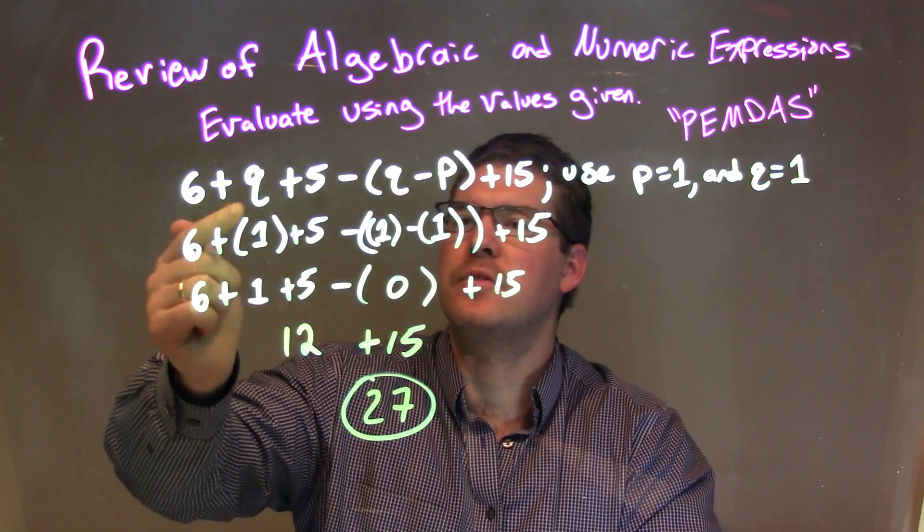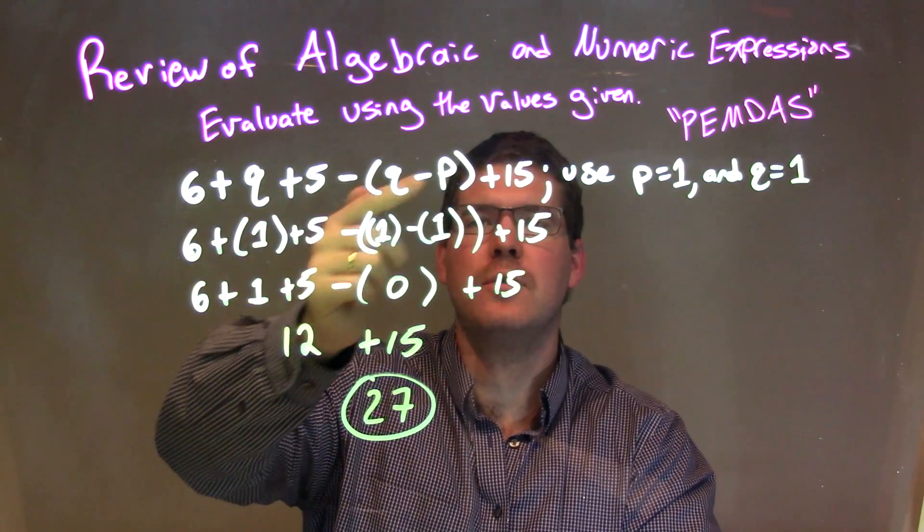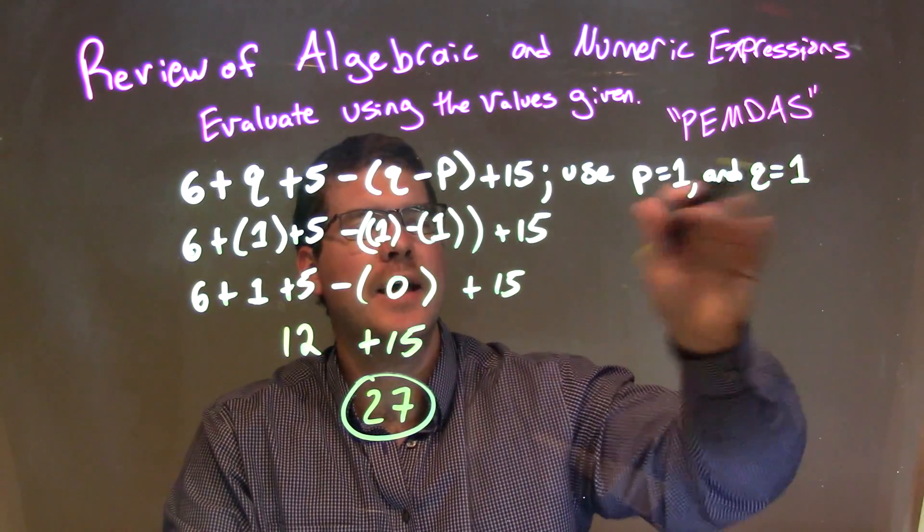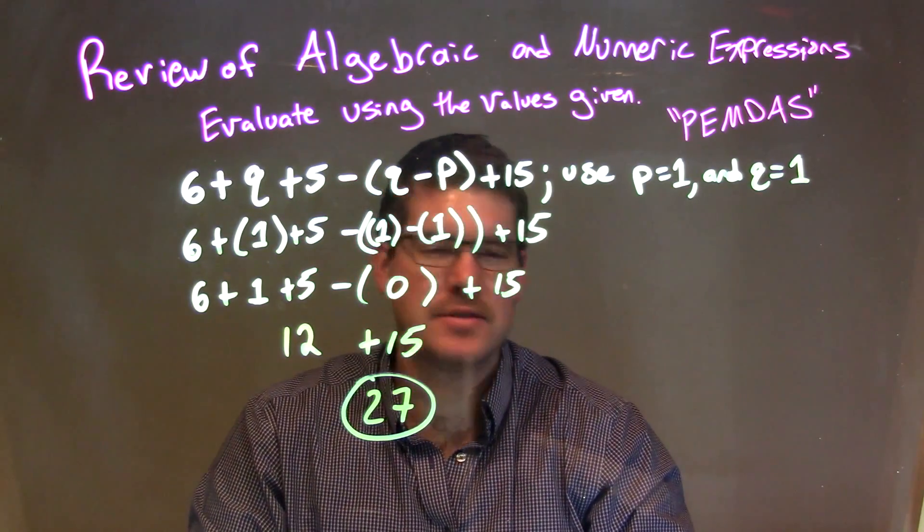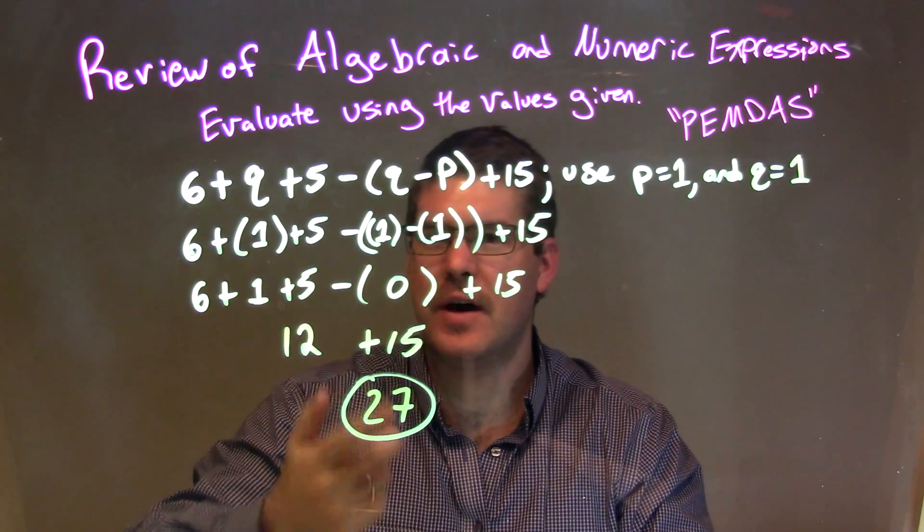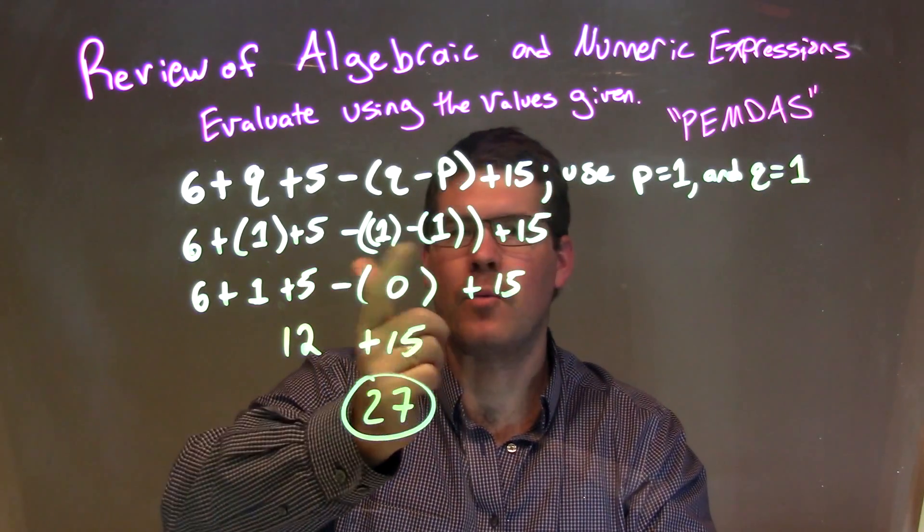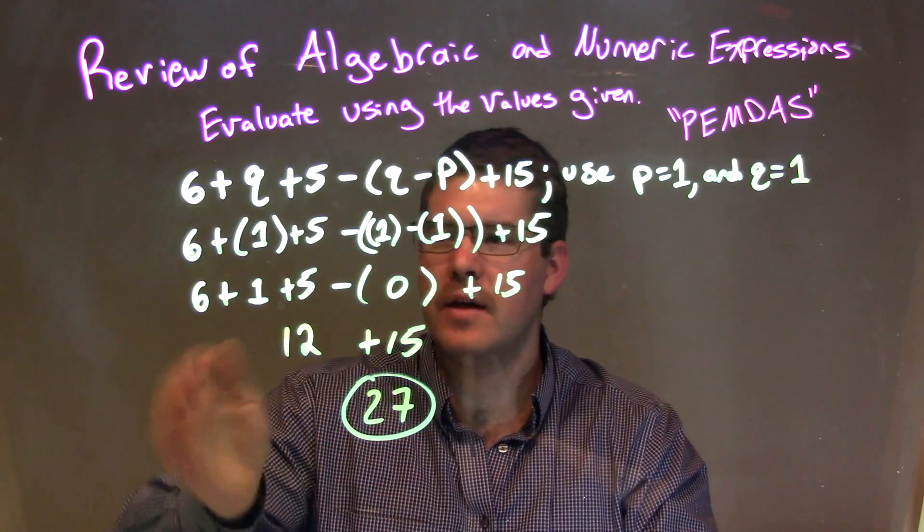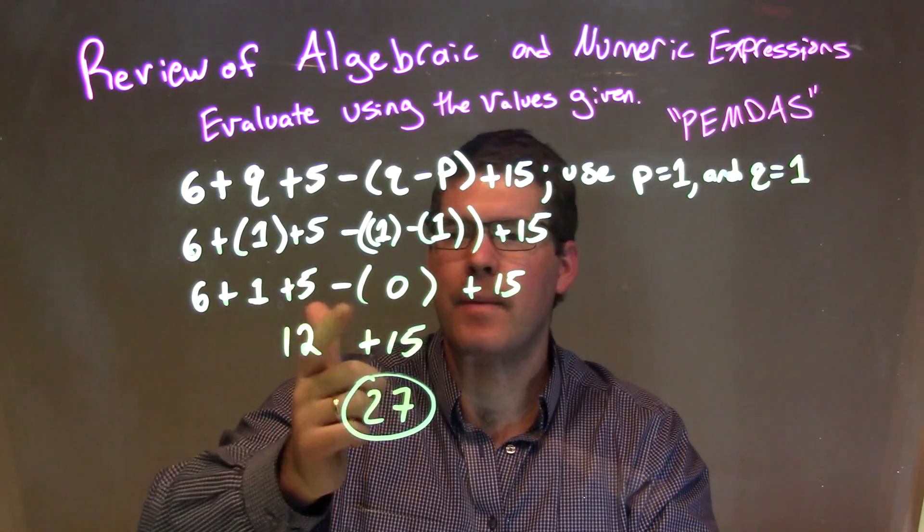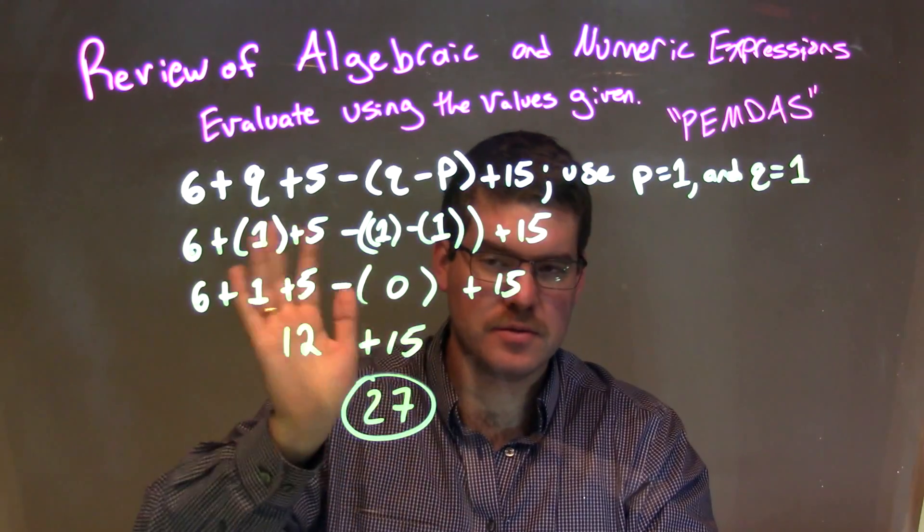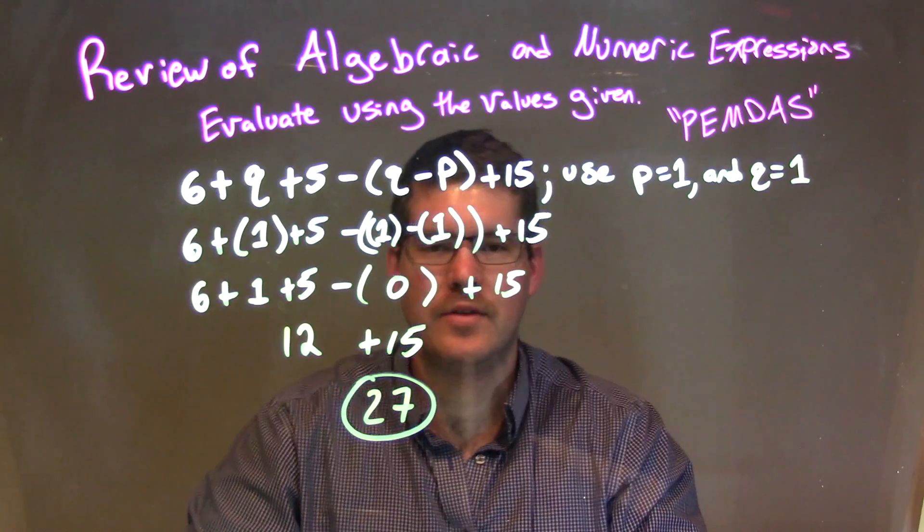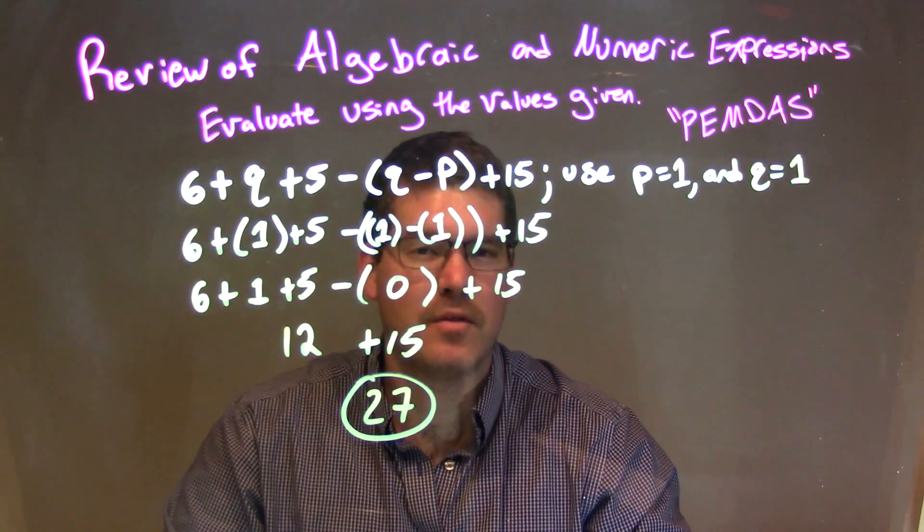As a recap, we're given 6 plus Q plus 5 minus Q minus P plus 15, with P equal to 1 and Q equal to 1. Every time I saw P or Q, I substituted a 1. Then I simplified, dealt with the parentheses first. 1 minus 1 is 0. Then I added across: 6 plus 1 plus 5 is 12. Minus 0 is nothing, and plus 15 gives us 27, which is my final answer.